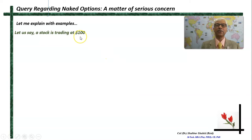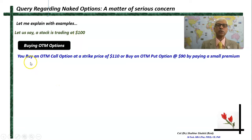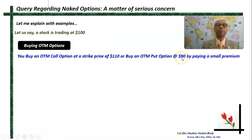Let me explain with some examples. Let us say a stock is trading at 100 dollars. You buy an OTM call option at a strike price of 110 — that means buying a call option at 10 percent higher strike price — or you buy an OTM put option at 10 percent lower price. You will have to pay a small premium for this.